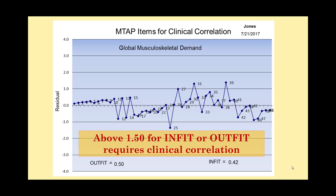These two statistics give us a sense of the degree to which Cindy's responses vary from a perfectly consistent set of responses. A general rule of thumb is that an infit score or an outfit score above 1.50 requires clinical correlation. What that means is that if Cindy has an infit or outfit score above 1.50, you look at the items that vary the most and ask Cindy about her actual responses to those. It's possible that she made an error, that she's over-limiting herself, under-limiting herself, or that she's frightened.